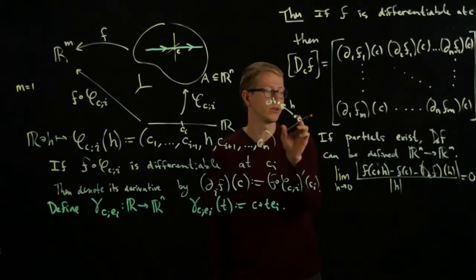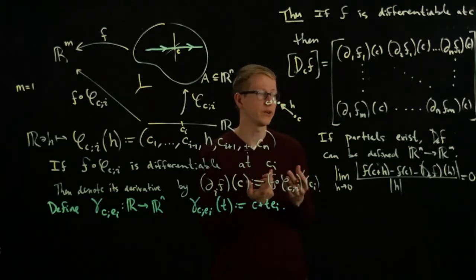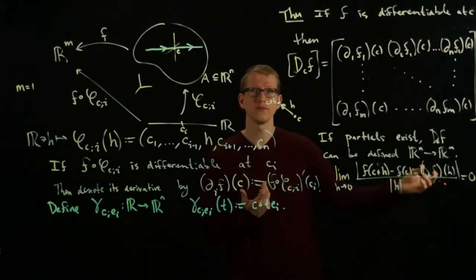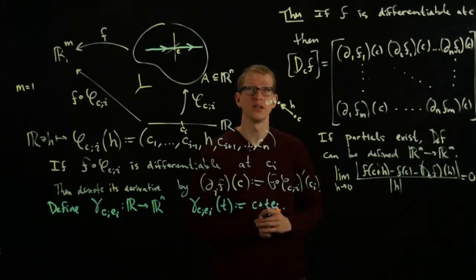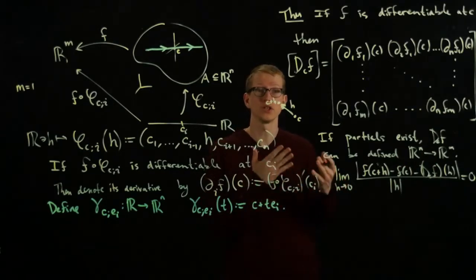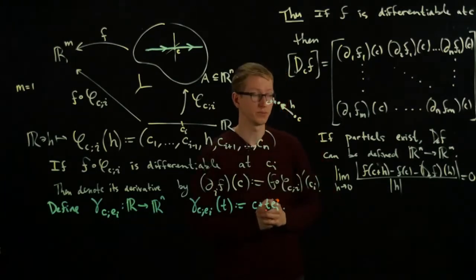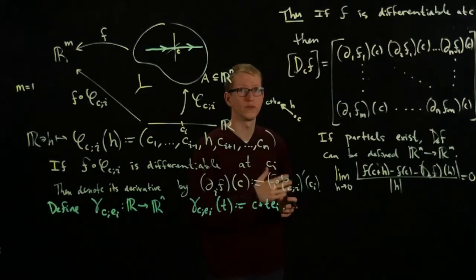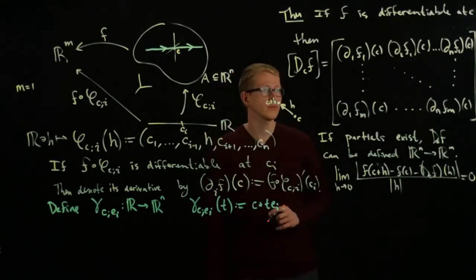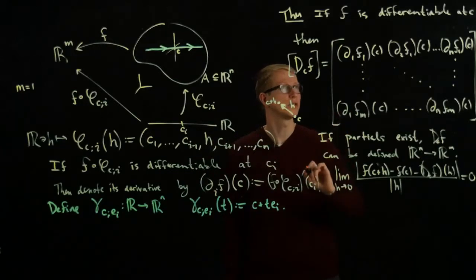This is telling us that the value of the function, the difference between these two functions, is essentially given by the value of this differential applied to that vector H. It's telling us that this derivative is a good approximation to the difference of those two functions, a good approximation to the function evaluated at C plus H if you know the value at C.